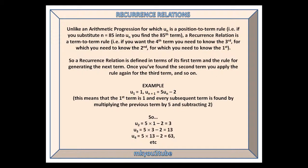For our example, we shall consider the recurrence relation u₁ equals 1, and u_{n+1} is 5u_n minus 2. This means that the first term is 1, and every subsequent term is found by multiplying the previous term by 5 and subtracting 2.